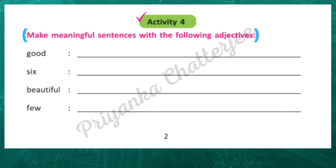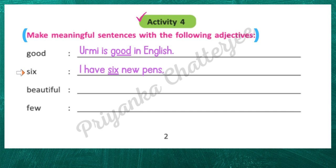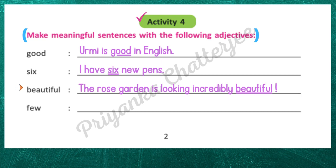I am a student. She is a good girl. Urmi is good in English. Six — I am a student of class six. I have six new pens. Beautiful — the rose garden is looking incredibly beautiful. It looks very beautiful. Few — Priya has a few friends.